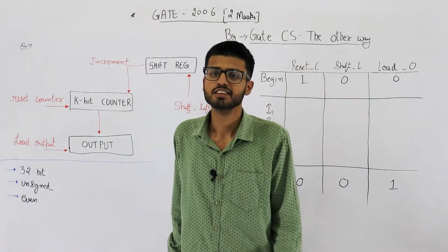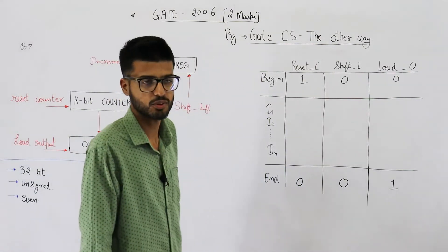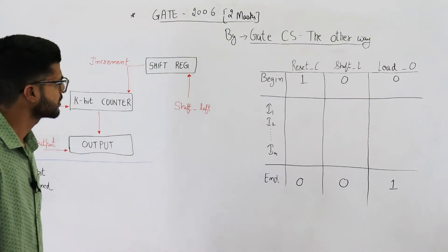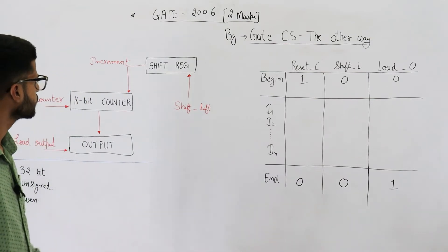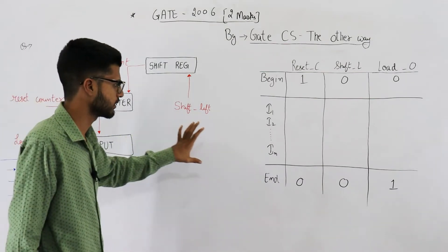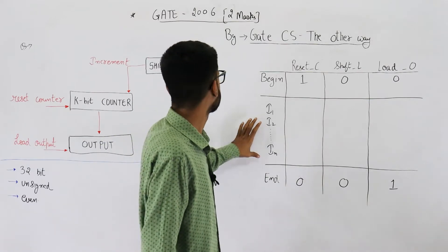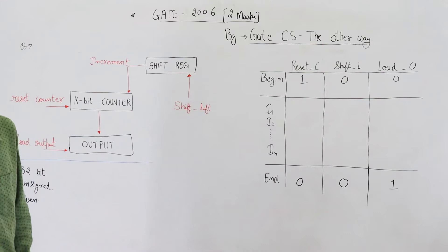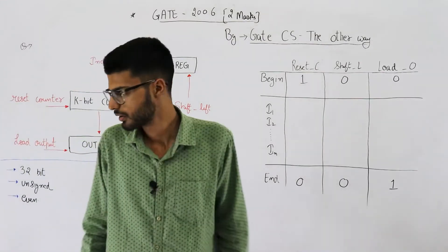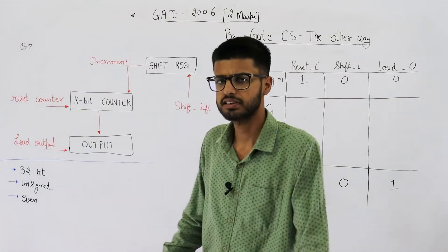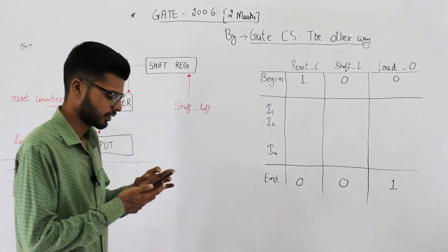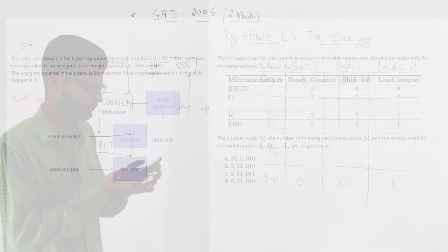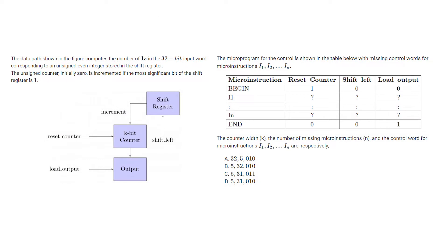This question was asked in the GATE 2006 exam — it's a two-mark question. You're given a diagram and a table. They're trying to count the number of ones in a 32-bit unsigned even integer using this circuit. The data path shown in the figure computes the number of ones in the 32-bit input word.